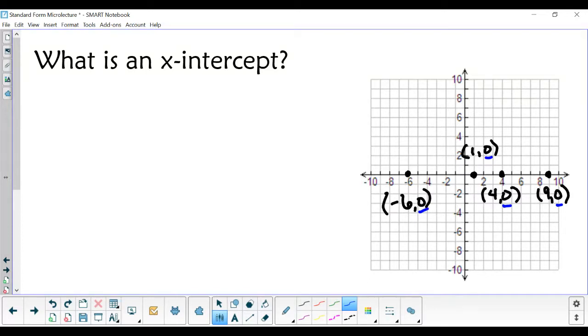So if we want to find an x-intercept, you are going to substitute 0 for y into the equation and solve for x.